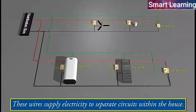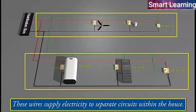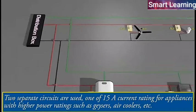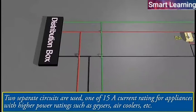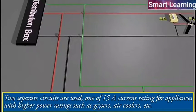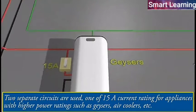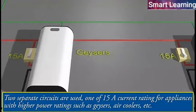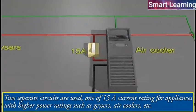These wires supply electricity to separate circuits within the house. Often, two separate circuits are used. One of 15A current rating for appliances with higher power ratings, such as geysers, air coolers, etc.